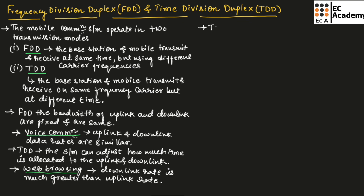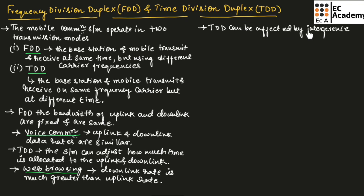Time division duplex can be badly affected by interference. For example, if one base station is transmitting while a nearby base station is receiving, to avoid this the nearby base stations must carefully time-synchronize and use the same allocations for uplink and downlink, so that both base stations can transmit and receive at the same time.